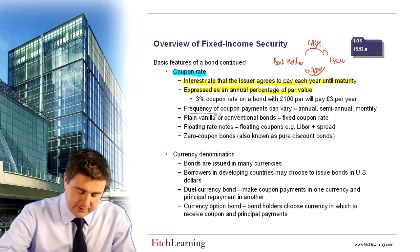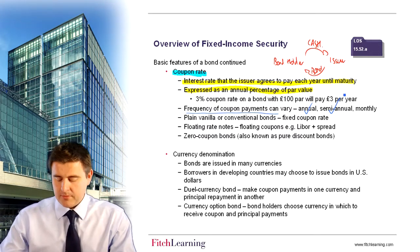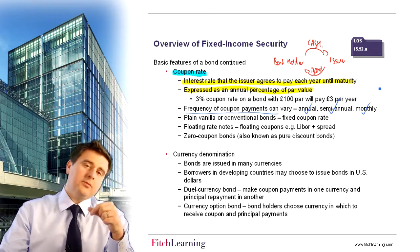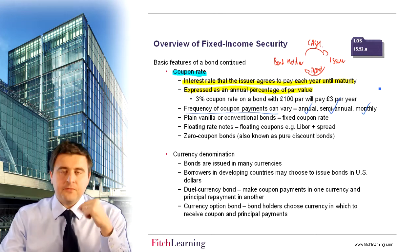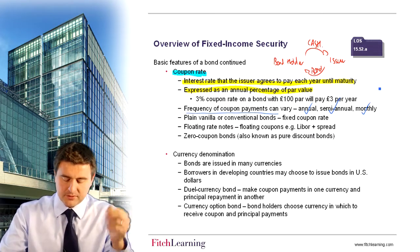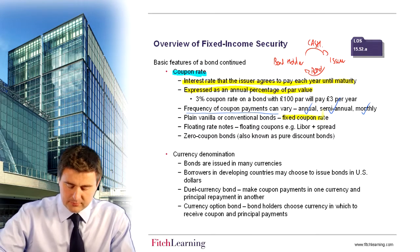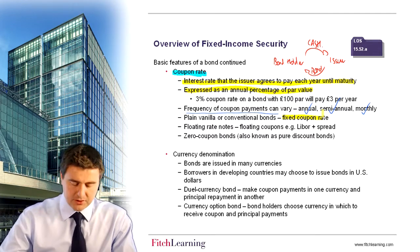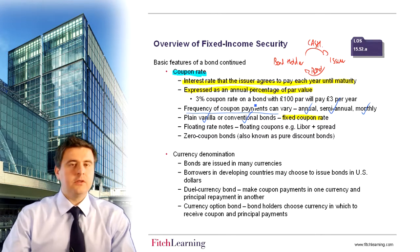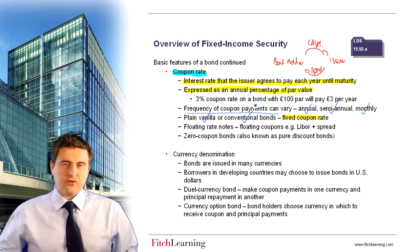The frequency of that coupon payment could vary — it could be annual, it could be two installments of £1.50, or it could even be done on a monthly basis. The coupon rate is always an annual rate, but the frequency of payment could be non-annual, such as semi-annual or monthly. If we have a fixed coupon — say 3% every year until maturity — we use the term plain vanilla or conventional bond to express the point that it's got a fixed coupon. We'll see later on that some coupon structures can vary.